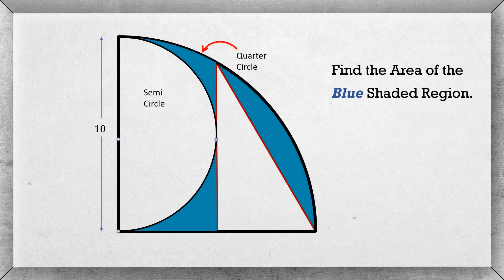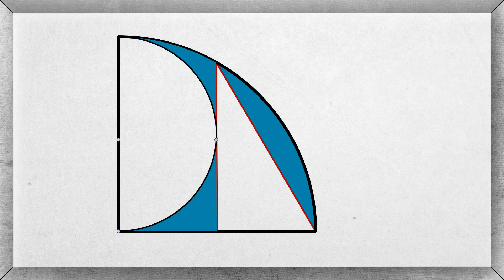Hello and welcome back to Mathematium. Today our problem is to find the area of the blue shaded region from the figure. We are given that the outer area is a quarter circle, and inside of this quarter circle is a semicircle and a triangle. The diameter of the semicircle is 10, which is also the radius of the quarter circle. Let's find the blue shaded region.